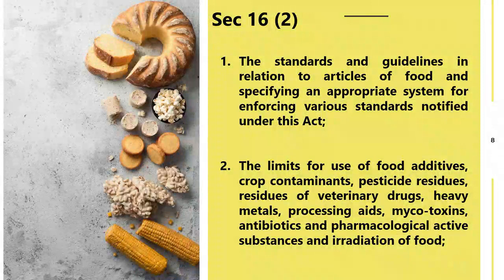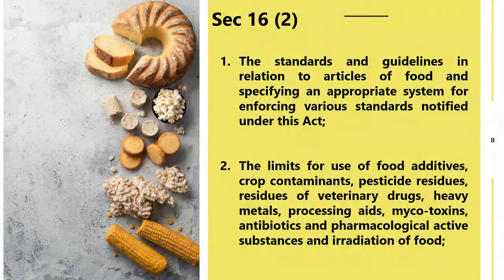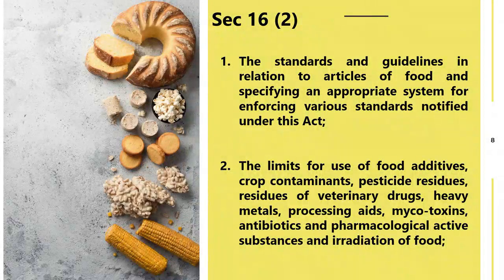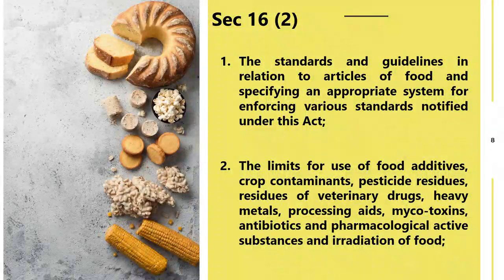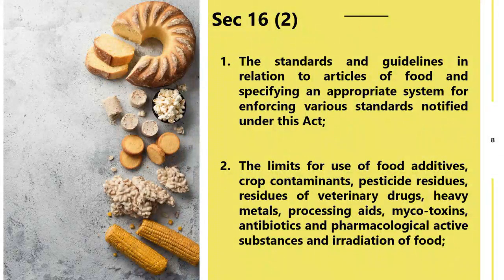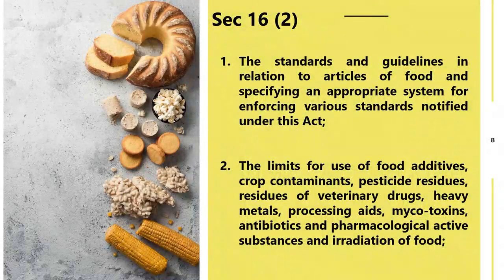For enforcement, for example, Food Safety Officers are the enforcers, then Designated Officers, then the enforcement agency, then the Commissioner of Food Safety. These are all the enforcement systems which the Food Authority has in its hand. So second point — standards and guidelines — the Food Authority sets the limits and decides the enforcement framework.